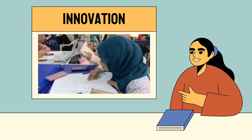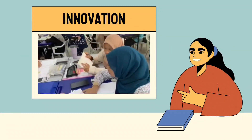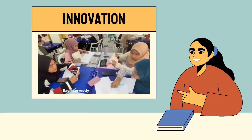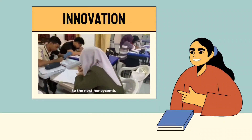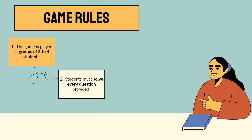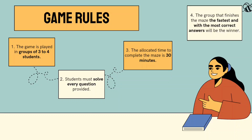The game is implemented and played by having students as players who solve the given questions to find their way out. Each correctly answered question allows players to advance to the next honeycomb. The game is played in groups of three to four students, who must solve every question provided. The allocated time to complete the maze is 30 minutes, and the group that finishes the fastest with the most correct answers will be the winner.